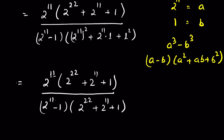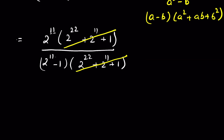The numerator has the factor (2²² + 2¹¹ + 1) and so does the denominator, so these like factors cancel. We are left with 2¹¹ upon (2¹¹ − 1).